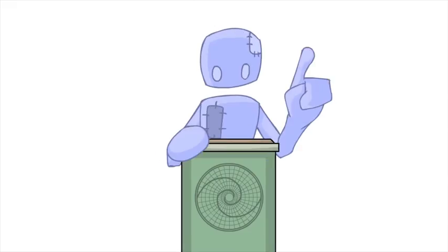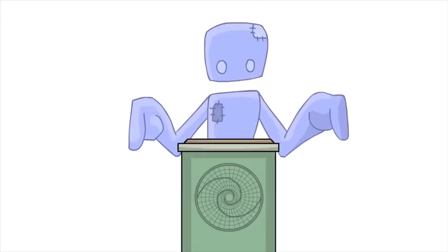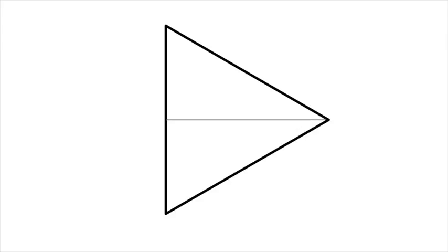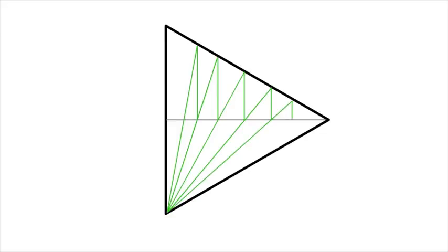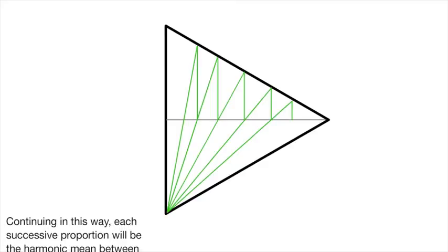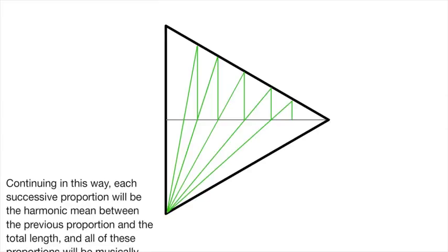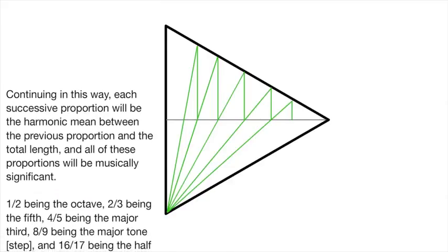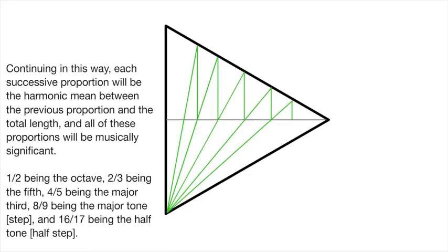Let's divert yet again to look at something very interesting. There was a man named Keith Critchlow who discovered something very important to understanding the geometry of music. First, he drew a straight line through an equilateral triangle, and then he measured from the middle of the center line and drew a straight line up to the top edge and back down to the bottom corner. By drawing this form, he discovered something of great importance. Continuing in this way, each successive proportion will be the harmonic mean between the previous proportion and the total length, and all of these proportions will be musically significant. One over two being the octave, two over three being the fifth, four over five being the major third, eight over nine being the major tone or step, and 16 over 17 being the half tone or step.